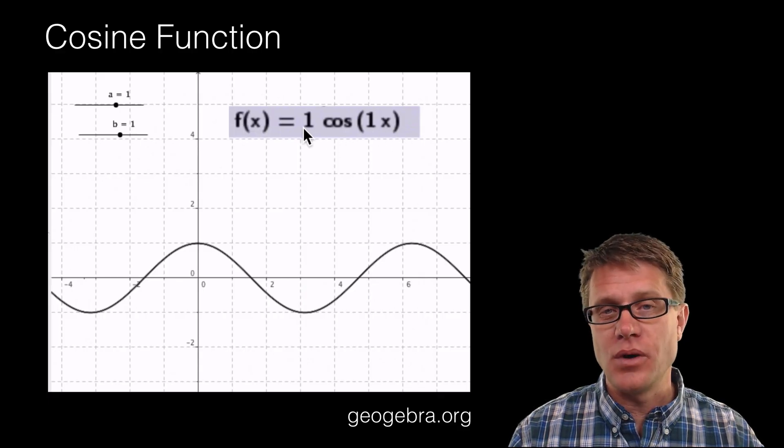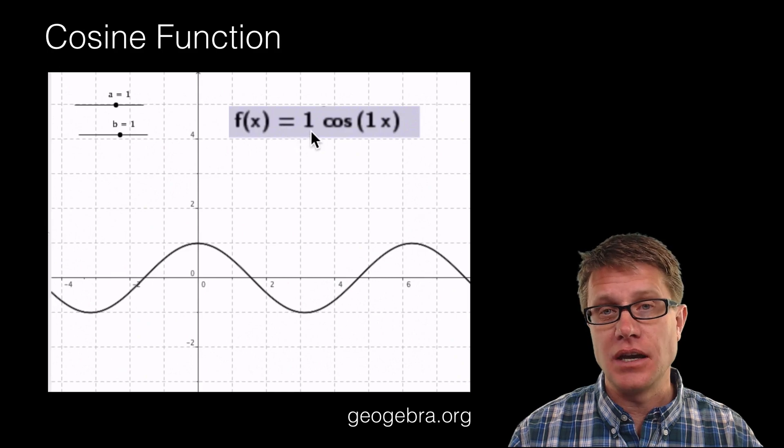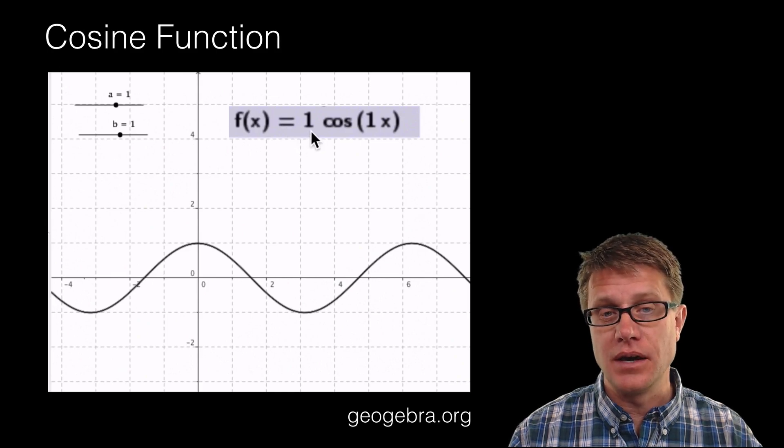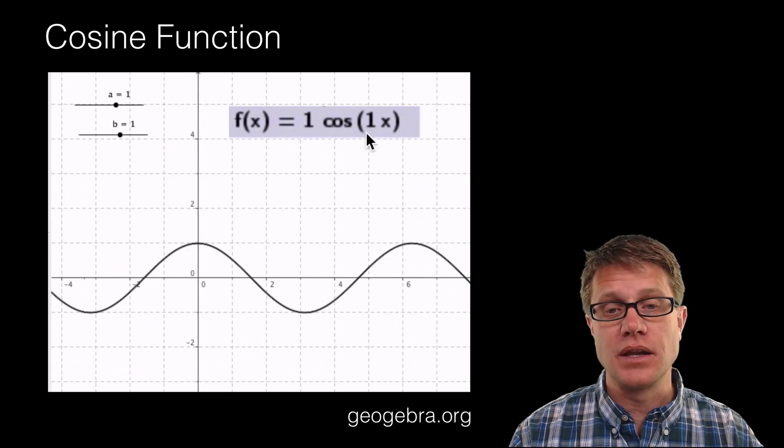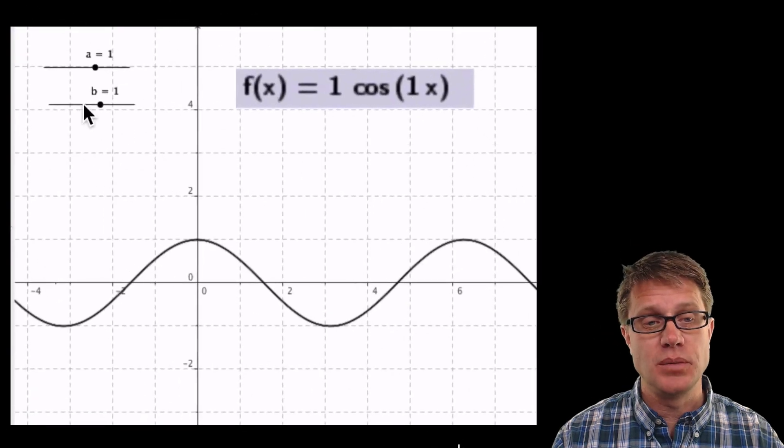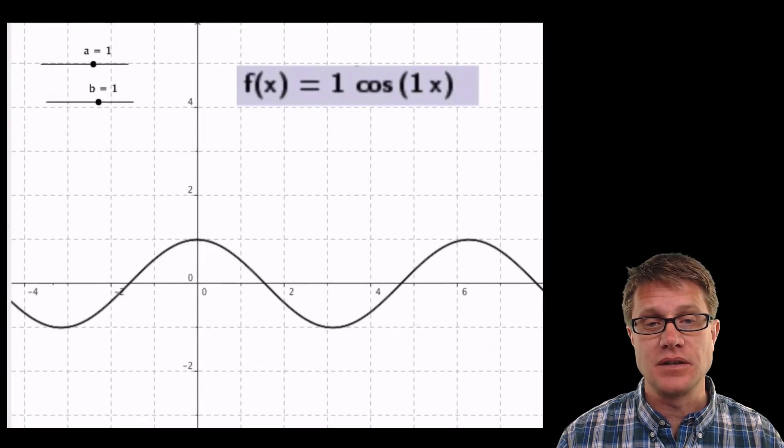So it is 1 cosine of 1x. And so this 1 value is a. So I am going to change a and we are going to figure out what happens to that wave. And then we will return it to 1 and then we will figure out what happens if we change b.